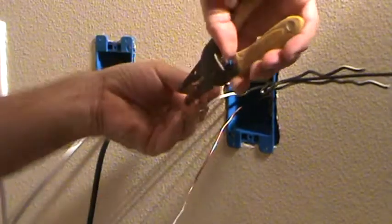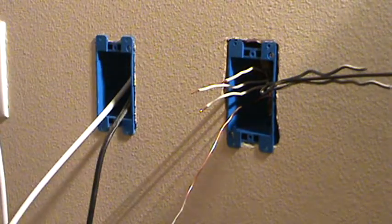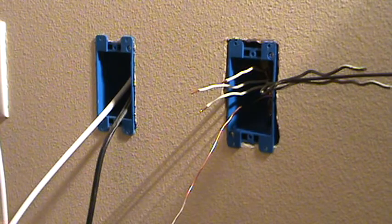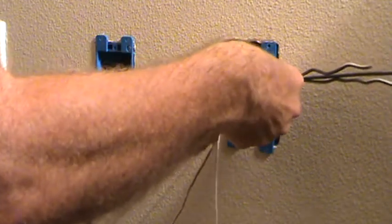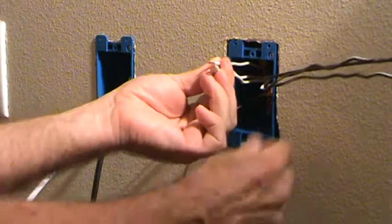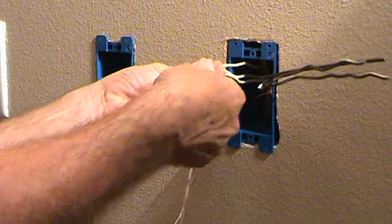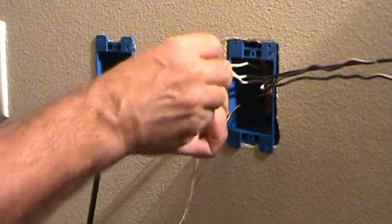Now if this was 14 gauge wire I might be able to get by with a yellow wire nut. Yellow wire nut is smaller. Okay, so I got a red. I want to put a red on there, and hope that I get them all here. There we go.